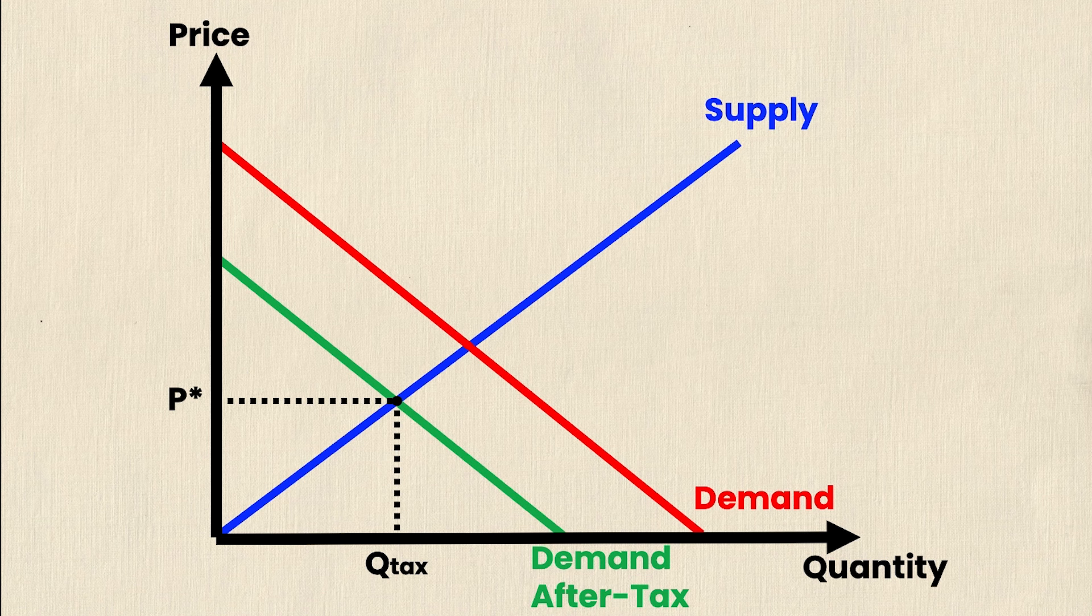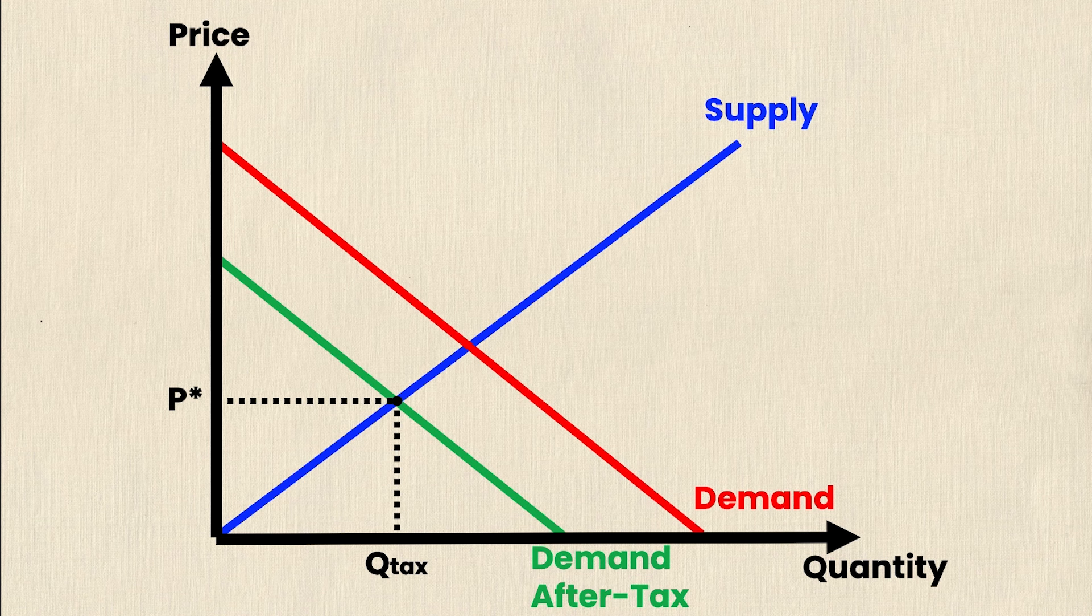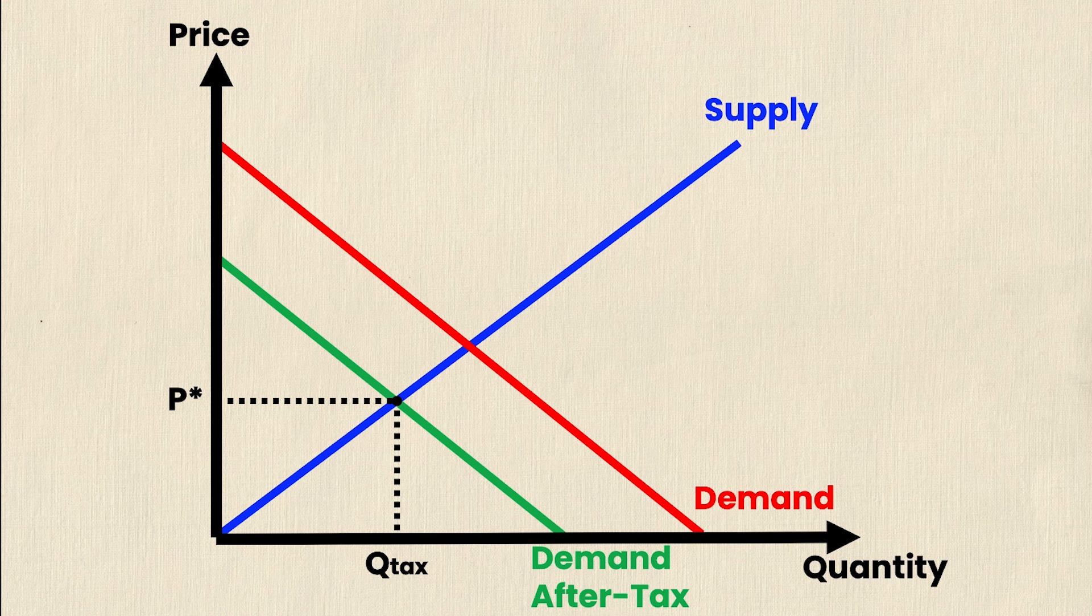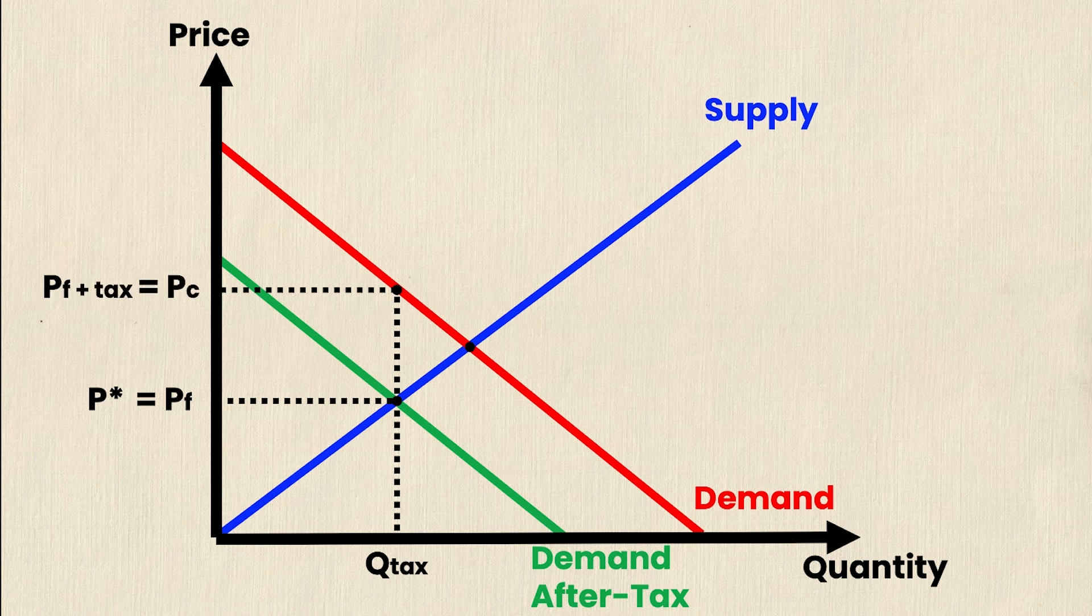So where's the tax revenue visible on this graph? Well, in order to see that we need to look at both the price the firms receive and the price the consumers pay because they're not the same anymore. This P star is actually the price that the firm receives from the consumer when they purchase the good. So we'll denote it by PF or price the firms receive. However, the price that the consumers actually pay is found by following the Q tax all the way up to the original demand curve. And we can denote this as the price the firms pay plus the tax. And this is the price that the consumers pay.